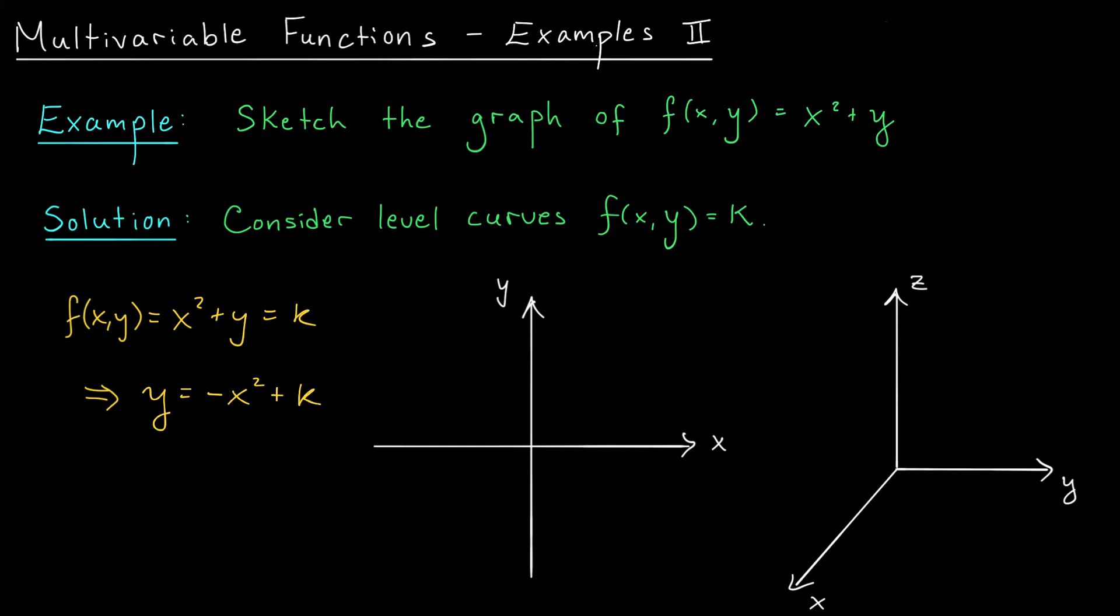Just like before, we're getting the equation of a parabola, but this time it's downward opening. When k is 0, for example, I get the parabola y equals minus x squared. Looks something like this. Here's k equals 0. When k is 1, the parabola is going to shift up by 1 unit. So I have y equals minus x squared plus 1, and that's when we're at a height of k equals 1.